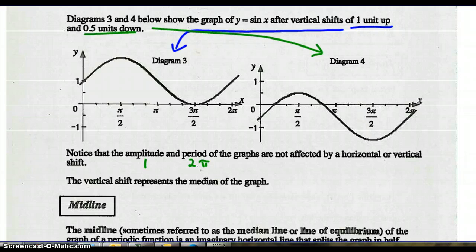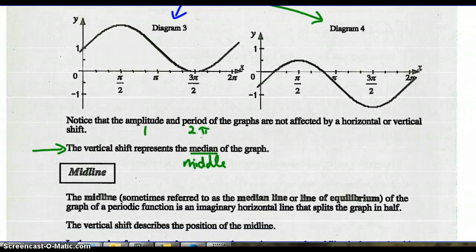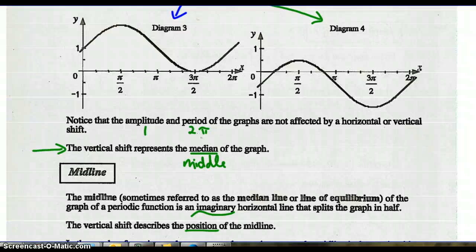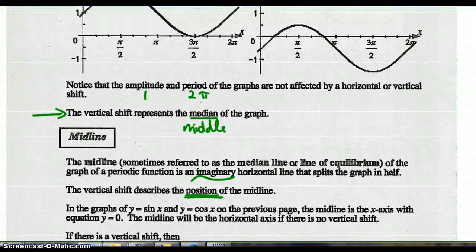The vertical shift represents the midline, or median — the middle of the graph. We can find the middle of the graph by drawing a midline, or median line, or line of equilibrium. This midline of a periodic function is an imaginary horizontal line, sometimes drawn as a dotted line, that splits the graph exactly in half. The vertical shift describes the position of the midline. In graphs of sine x and cosine x with no vertical shift, the midline is the x-axis, so the equation is y equals 0.